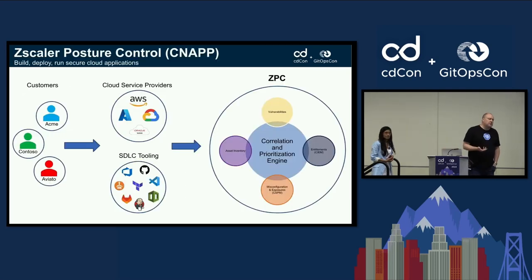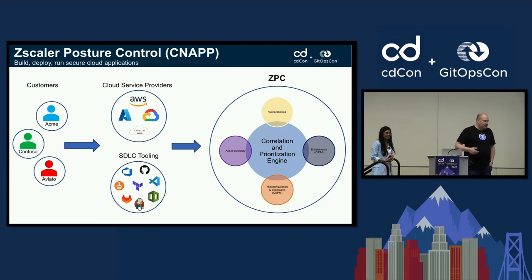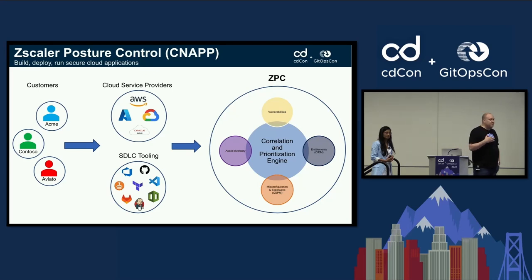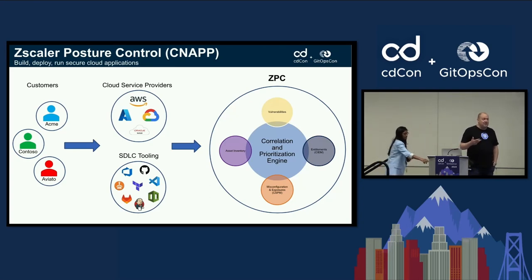Both Nita and I work on a product at Zscaler called Zscaler Posture Control. It is part of a category of applications commonly referred to as CNAPP — for those folks who aren't aware of the latest Gartner acronyms, it stands for Cloud Native Application Protection Platform, which is kind of a mouthful. In essence, we help our customers secure their cloud native applications. We have customers, and this is a little different when we talk about tenants in our use case.